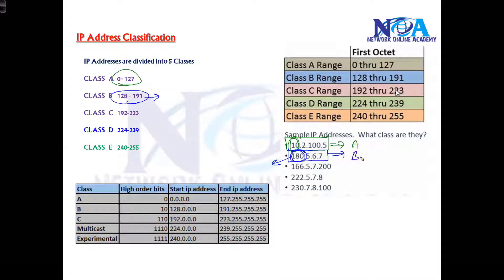And I go with the third example, 166. So 166 comes in the range of B, so this is going to be Class B. And the fourth one, 222. So 222 comes in the range of this Class C, so I'll say this is my Class C example. Likewise, if I go with the last one, 230, 230 comes in the range of Class D, so we'll say this address is a Class D example.